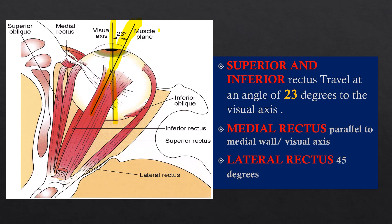This 23-degree angle is important because the superior rectus and inferior rectus follow the orbital axis, meaning they form a 23-degree angle with the optical axis at insertion. The medial rectus travels almost parallel to the medial wall of the orbit and to the visual axis, so it forms almost no angulation with the visual axis. The lateral rectus follows the lateral wall and therefore forms an angle of about 45 degrees with the visual axis. This knowledge is essential for understanding extraocular muscle movements.